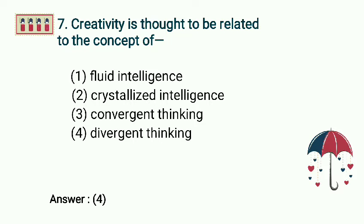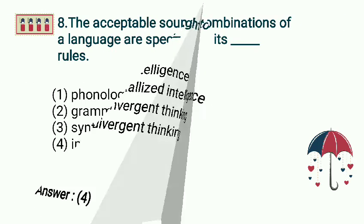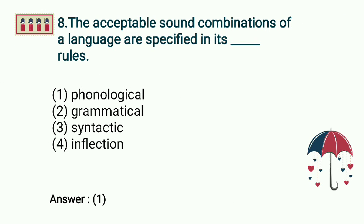Question 8: The acceptable sound combinations of a language are specified in dash rules. Options: Phonological, Grammatical, Syntactic, Inflection. Answer: Phonological rules.